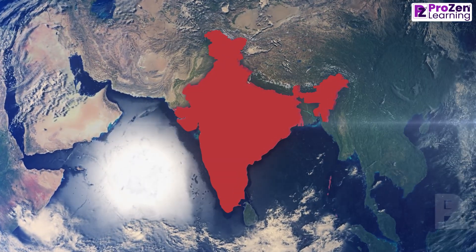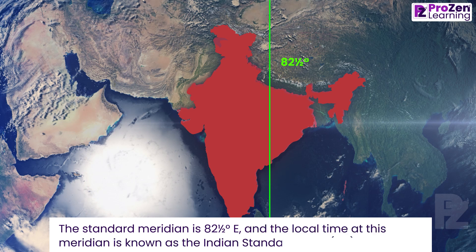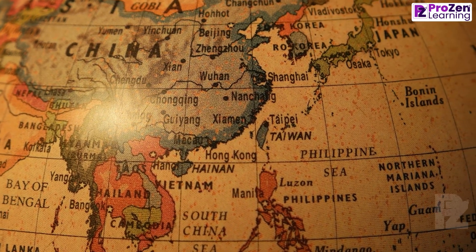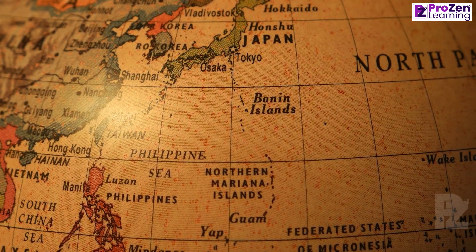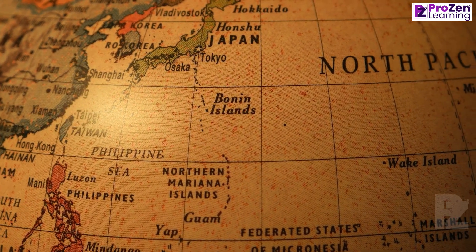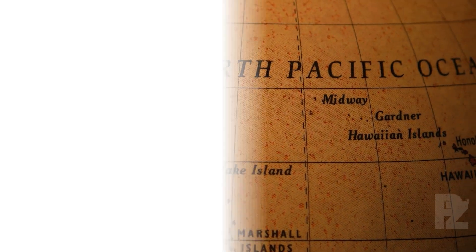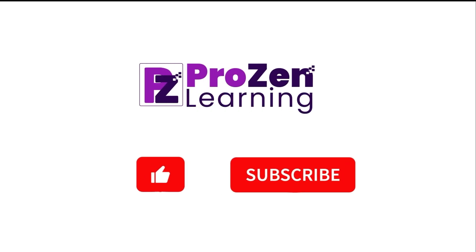To address these differences, standard time zones are established. In India, for example, the standard meridian is 82.5° E, and the local time at this meridian is known as the Indian Standard Time (IST). Understanding latitudes and longitudes helps us navigate, study climates, and coordinate time across the globe.